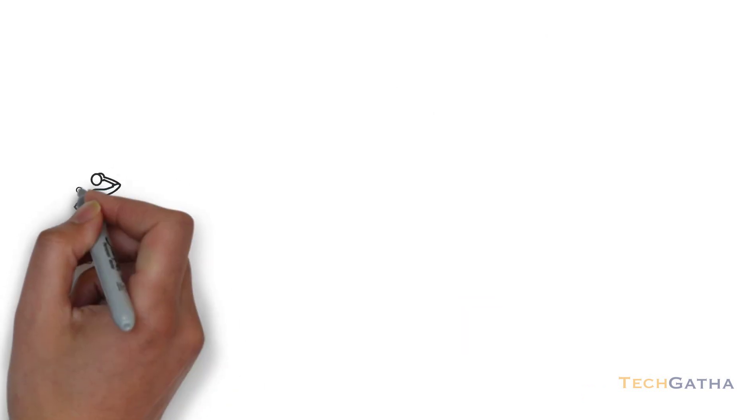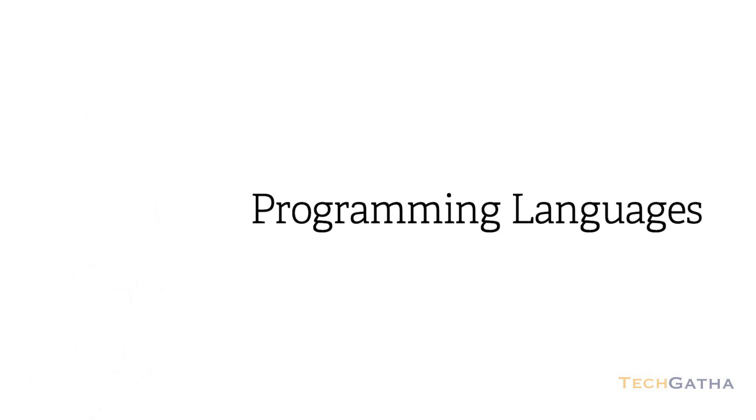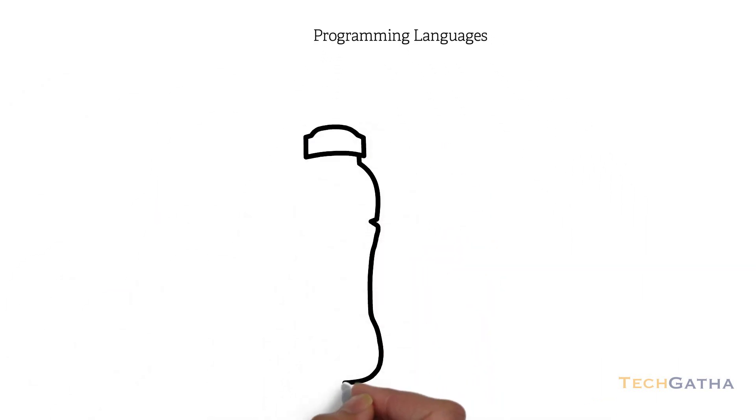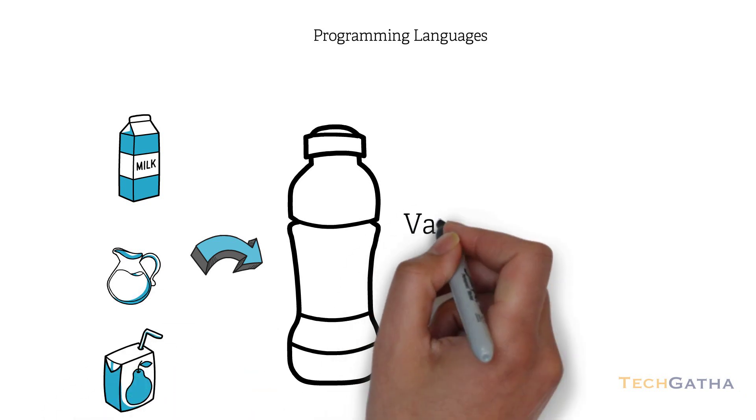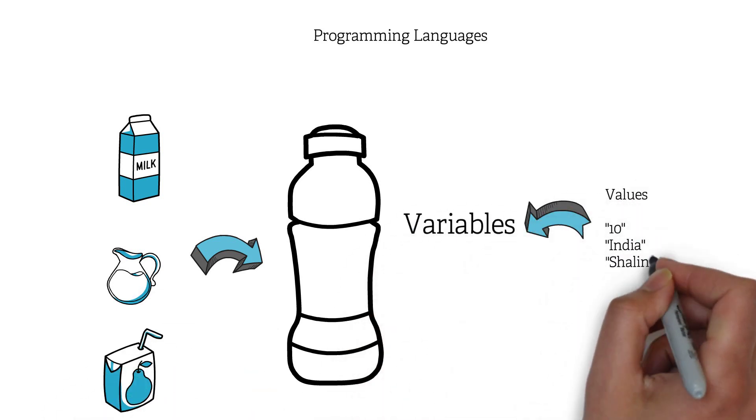Now the question arises, how is it linked with programming languages? The way bottles are containers to store items, programming languages have variables that act as containers to store values.